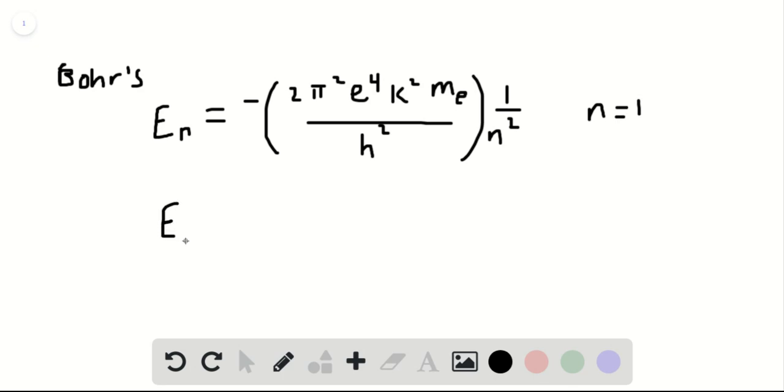Therefore, e sub 1 is equal to negative, just plugging those constants in and plugging in n equals 1, negative 13.6 electron volts.